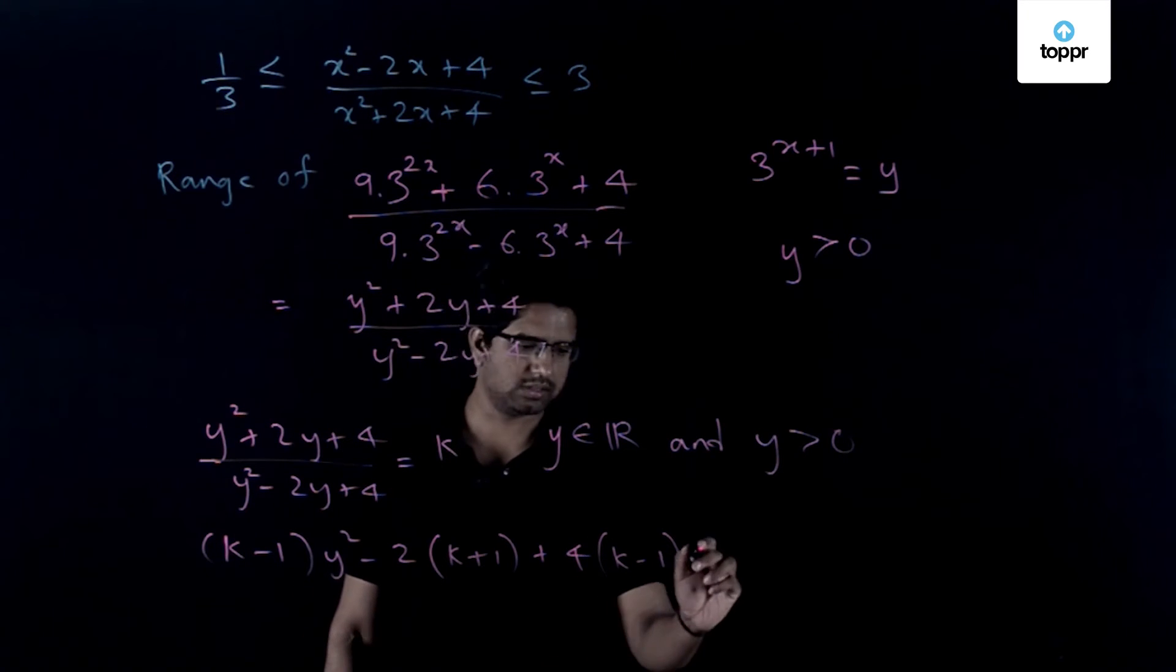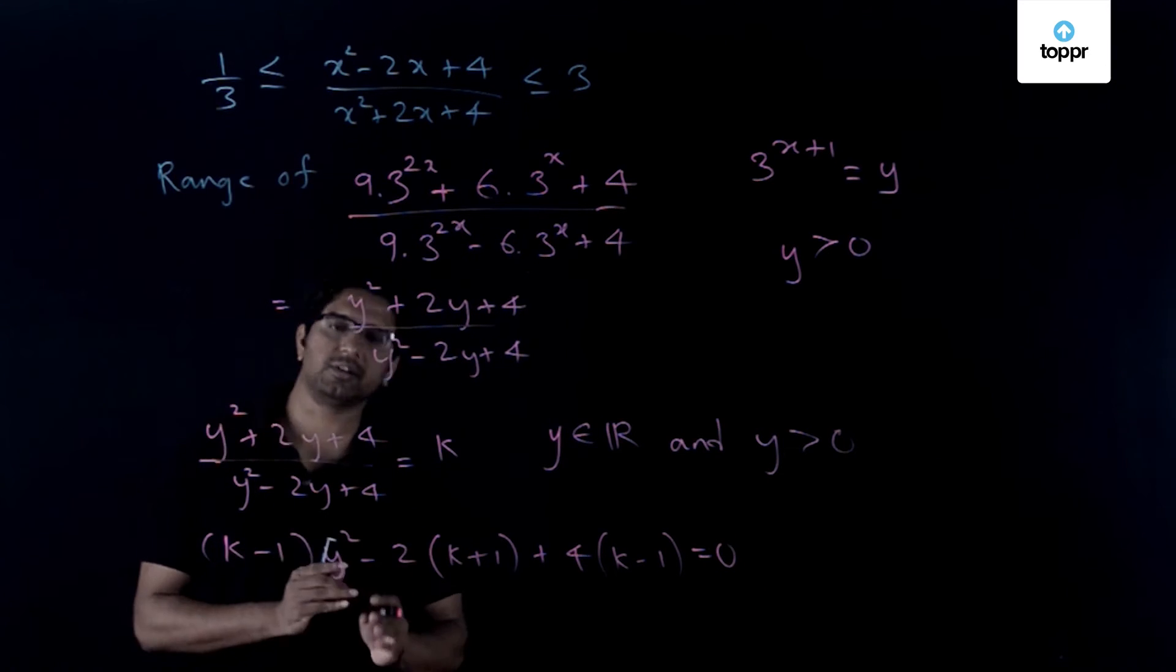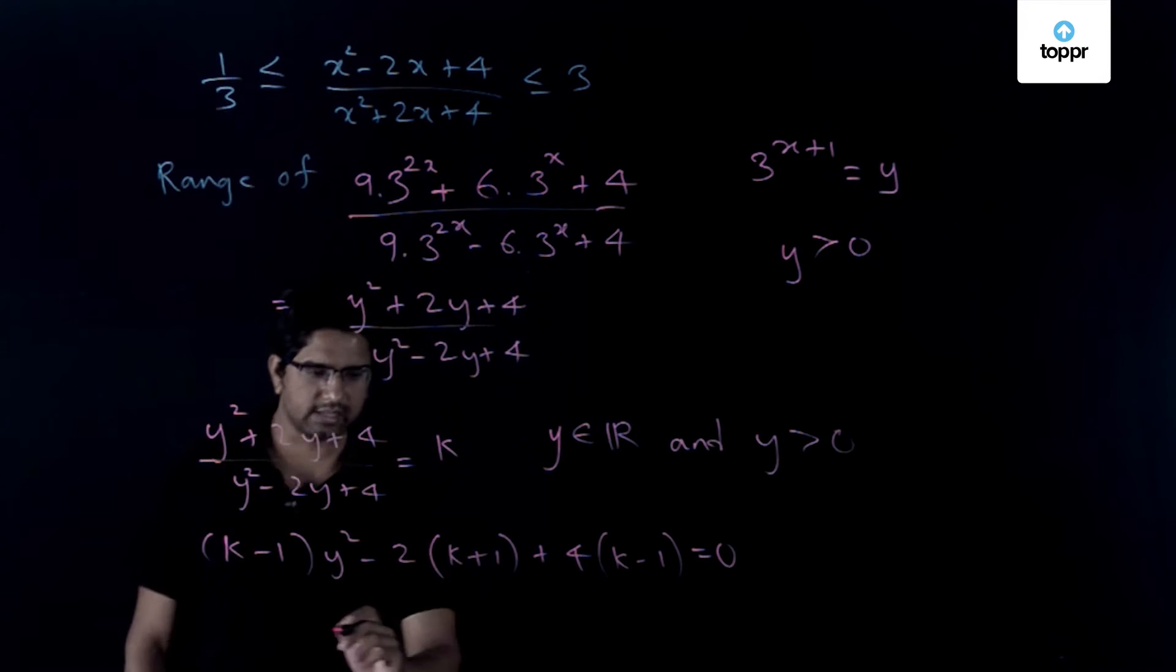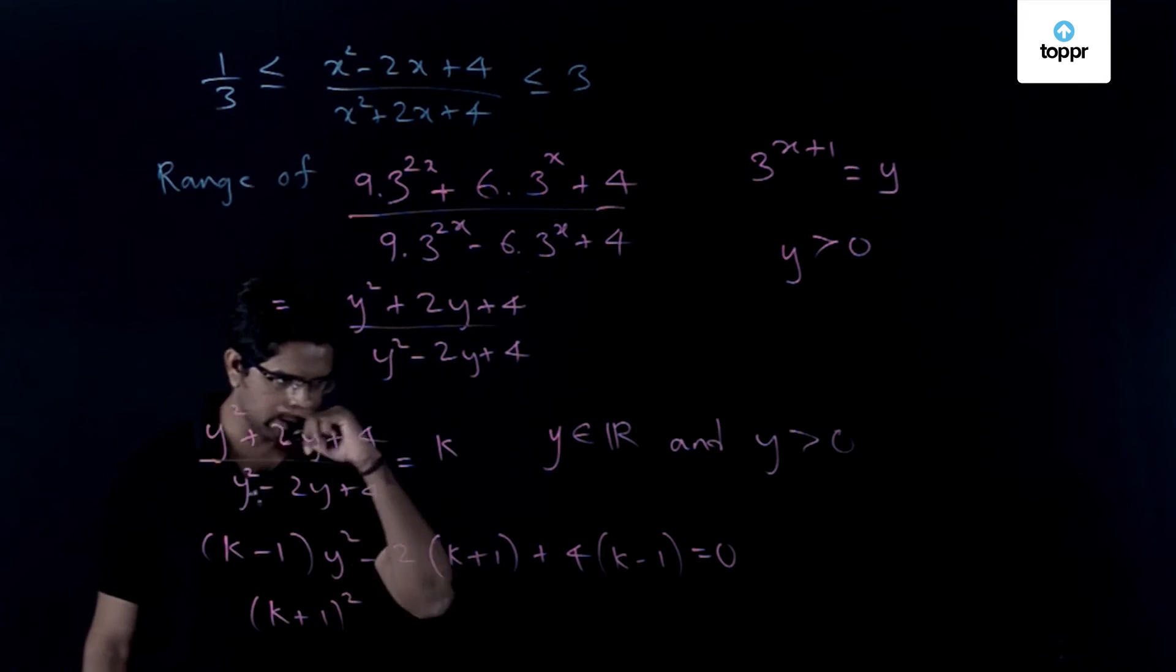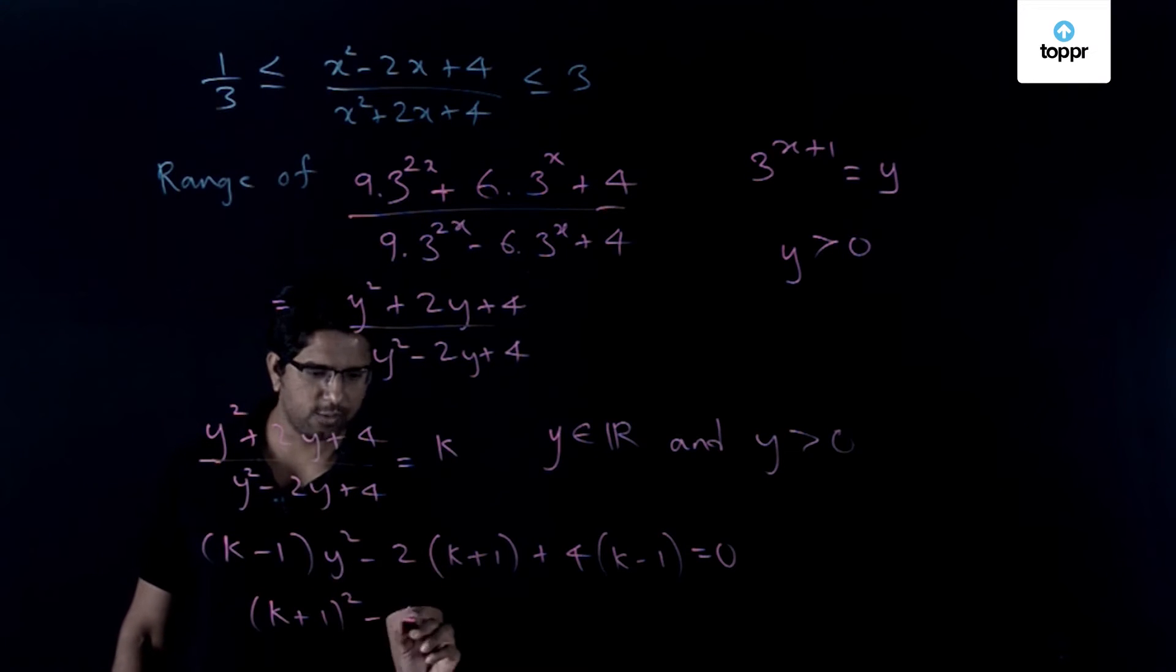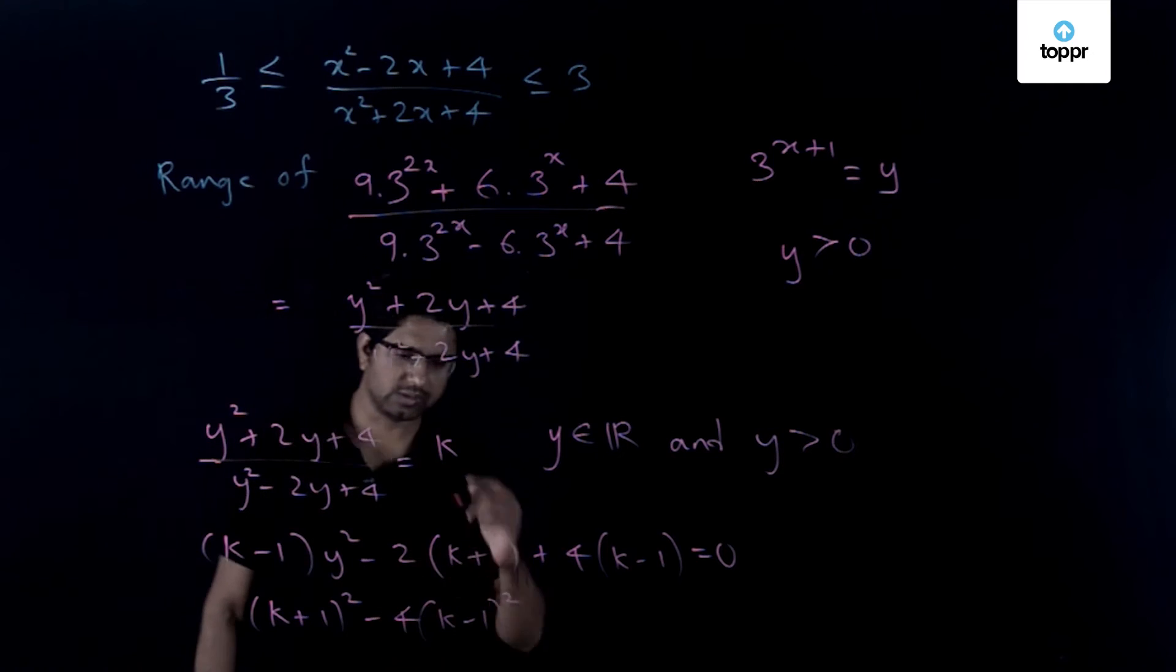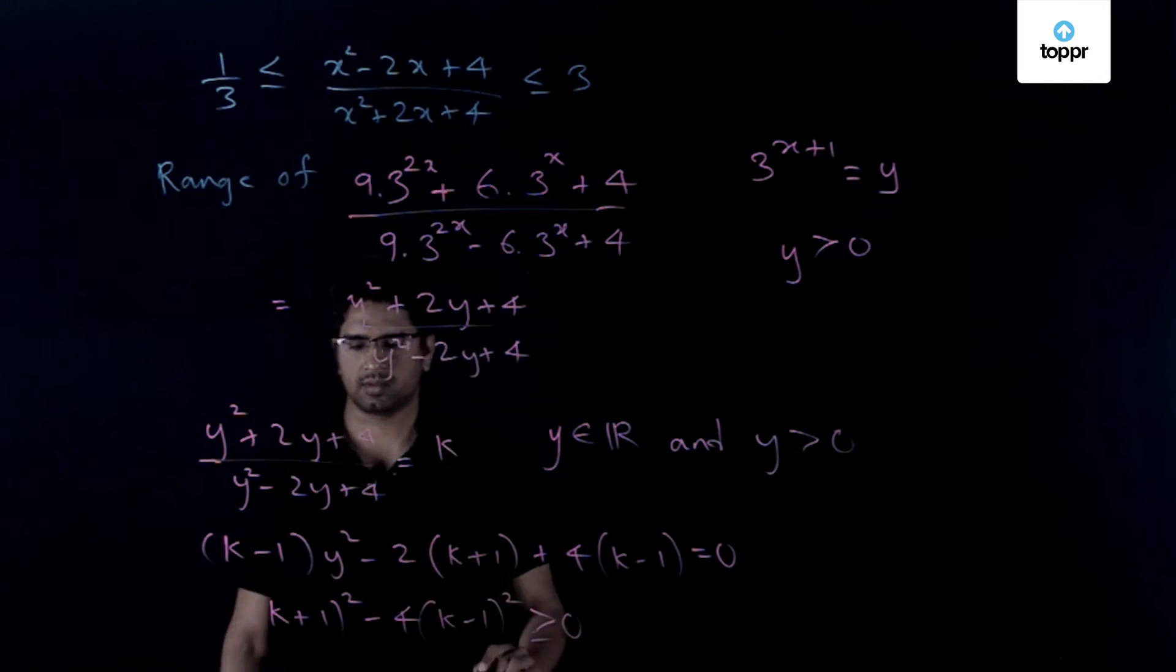So this is equal to 0 and first of all let us use the discriminant condition to get real roots. So what that gives is (k + 1)² - 4 times (k - 1)². So this should be greater than or equal to 0.